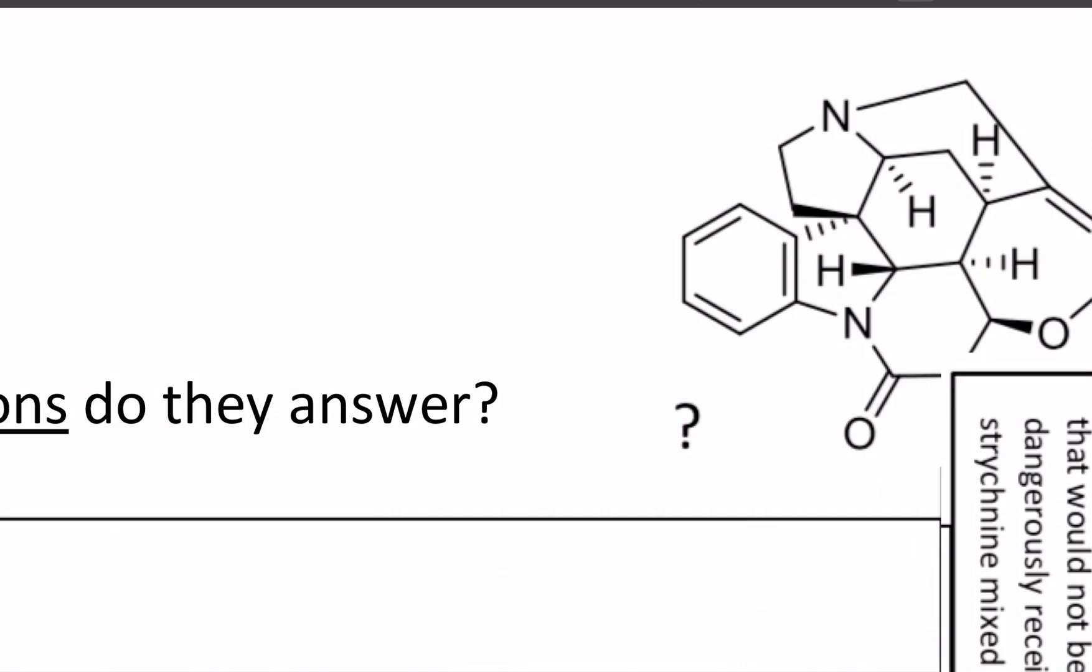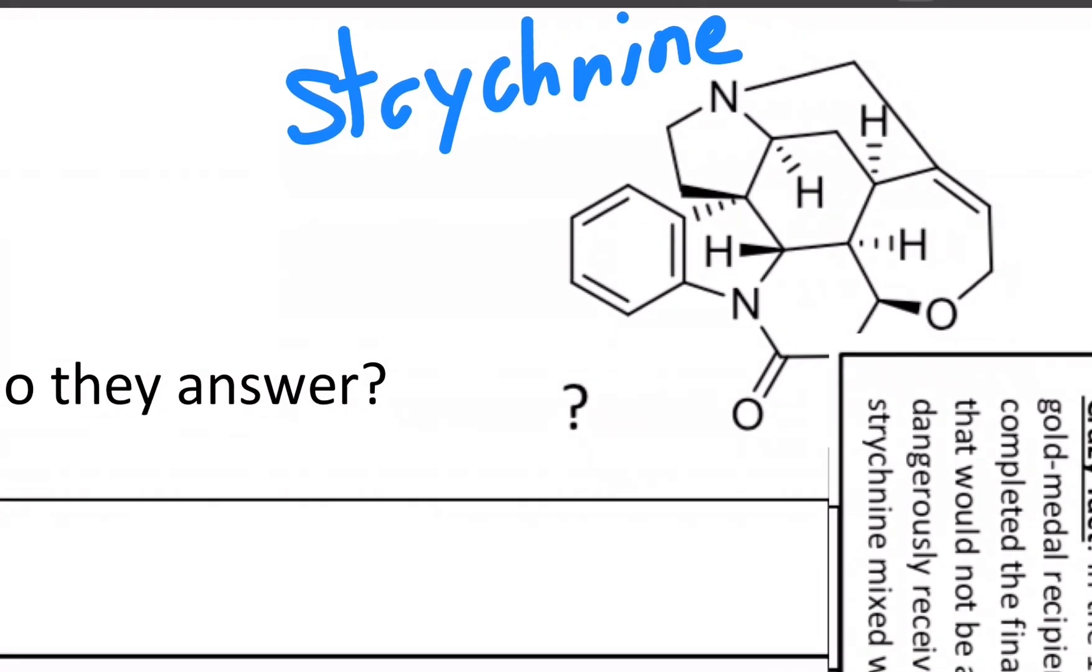For example, this is the strychnine molecule that there's a picture of up here. The actual molecule in real life doesn't look anything like our picture. This is just how we represent those atoms. Strychnine is just a white solid if you look at it. So how do chemists learn that this is the structure?